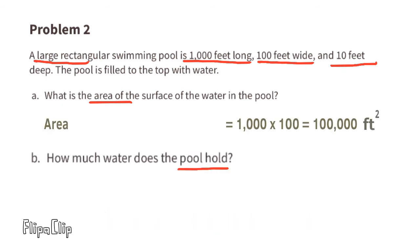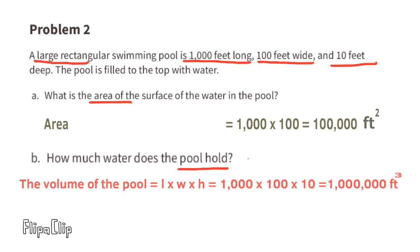Part B: How much water does the pool hold? That's going to be the volume, which is three-dimensional. So we'll need to multiply 1,000 times 100 times 10, and that would be 1,000,000 cubic feet.